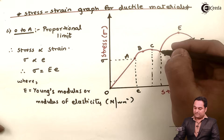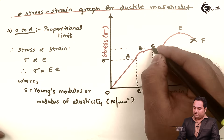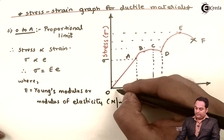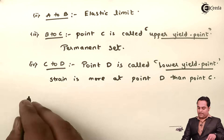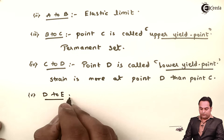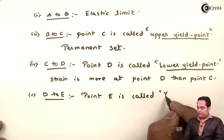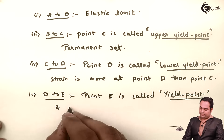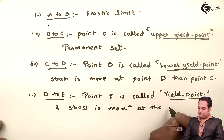From D to E, stress is increasing in a tremendously high manner. As we can see in the diagram, the stress at point E is the highest point in this graph — we are getting maximum stress here. Point E is called the yield point and stress is maximum at this point.